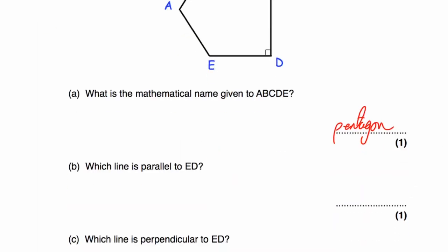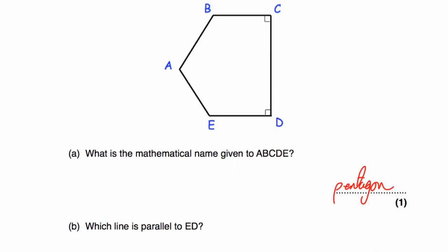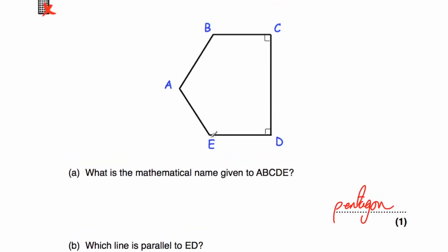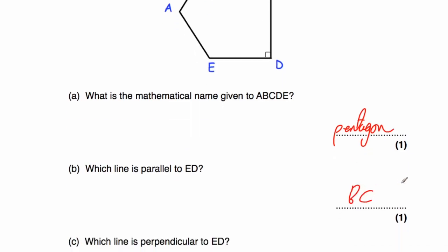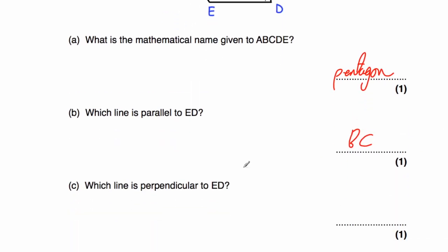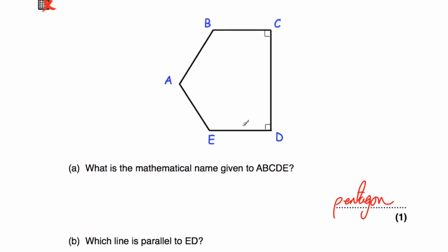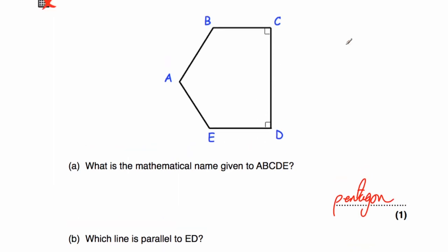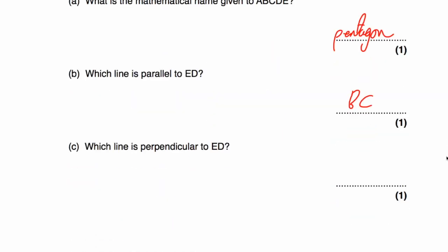Part B says: which line is parallel to ED? Looking at our pentagon, the line going in the same direction as ED would be BC. Part C: which line is perpendicular to ED? It meets or crosses it at 90 degrees. The line CD is perpendicular to it because there's a 90 degree angle between ED and CD. So CD, or DC — I'll call it DC.